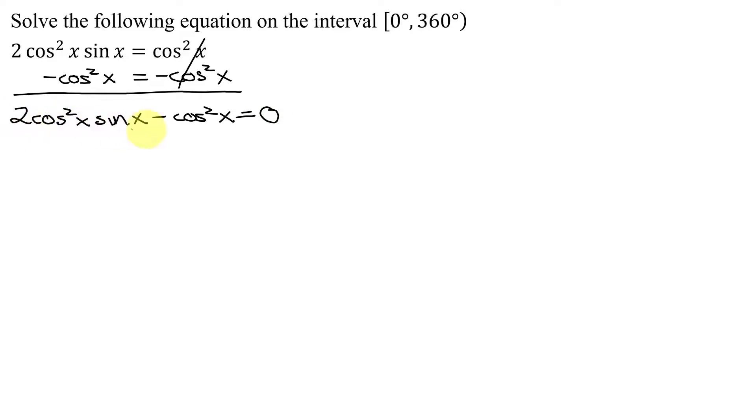Now, does this factor? There are only two terms, and is there a greatest common factor? Yes, cosine squared x. So I'm going to factor that out. So I'm going to get cosine squared x, and if I factor it out of the first term, it's going to leave 2 times sine x minus one, because if you factor a cosine squared x out of a cosine squared x, it has to leave the placeholder of one. So I get cosine squared x times the quantity 2 sine x minus 1 equals zero.